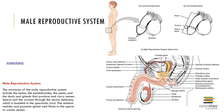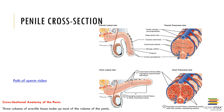The urethra transports both urine and semen to the exterior, although at different times. It extends from the bladder to the tip of the penis and is divided into three regions: the prostatic urethra, which is surrounded by the prostate gland; the membranous urethra, which passes through the urogenital diaphragm; and the spongy or penile urethra, which runs through the penis and opens to the outside through the external urethral orifice.